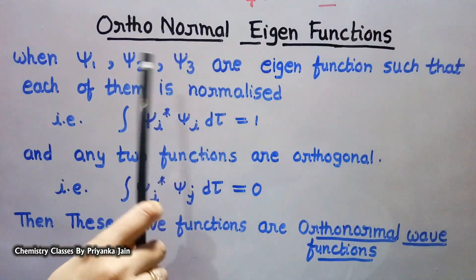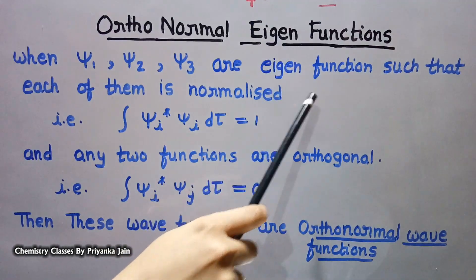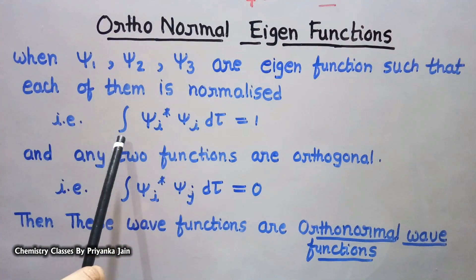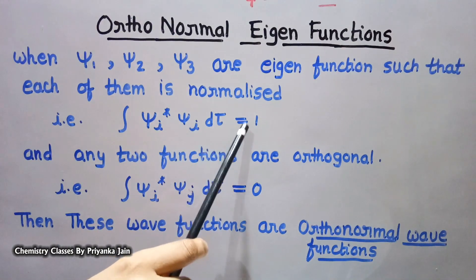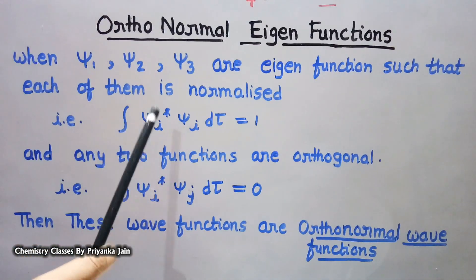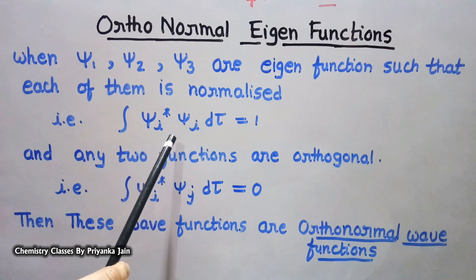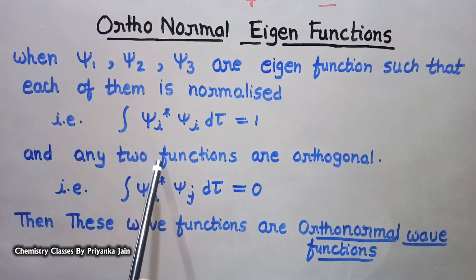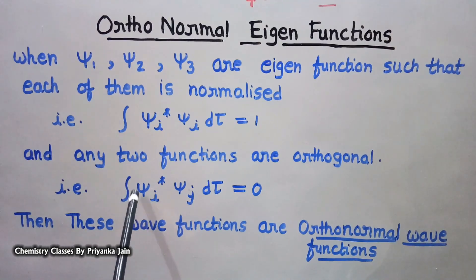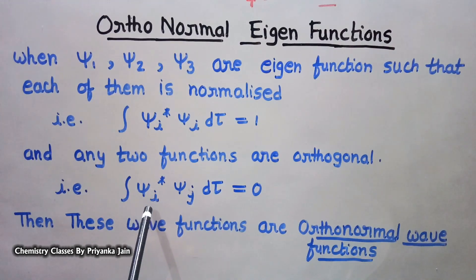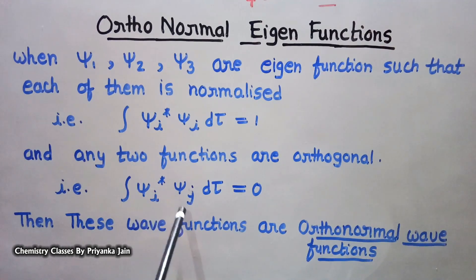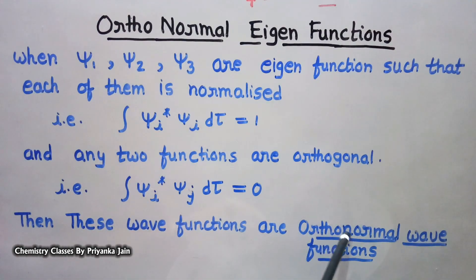Orthonormal eigenfunctions: when ψ₁, ψ₂, ψ₃ are different eigenfunctions such that each is normalized — meaning ∫ψᵢ* · ψᵢ dτ = 1 — and any two different functions are also orthogonal — meaning ∫ψᵢ* · ψⱼ dτ = 0, where i ≠ j — then such wave functions are known as orthonormal wave functions.